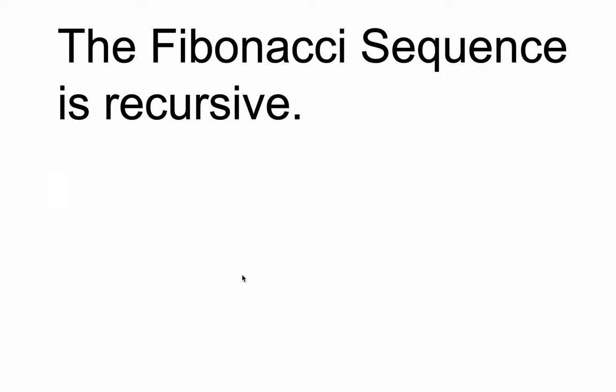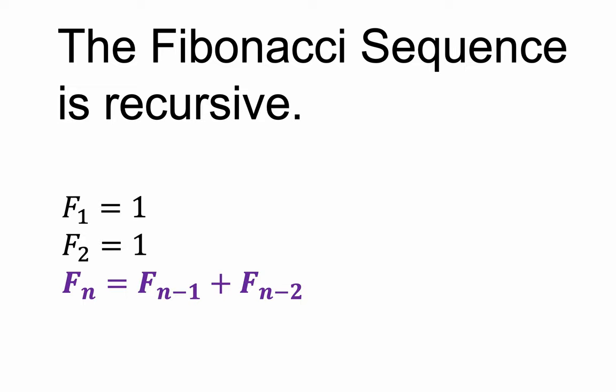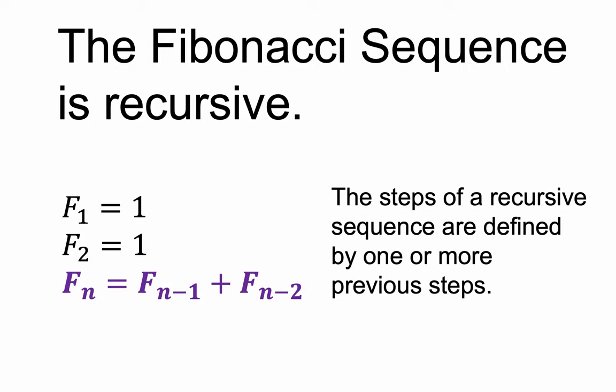This is a recursive sequence. When you have a recursive sequence, you're building it one step at a time. You know the first step and the second step, then you can find the third, fourth, and fifth by using the previous steps. You can't jump around — if you want to jump to the 100th step of the Fibonacci sequence, you have to find the 99 steps before it. In general, recursive steps are defined by one or more previous steps. Some sequences are strictly recursive; others you can also write with an explicit formula.